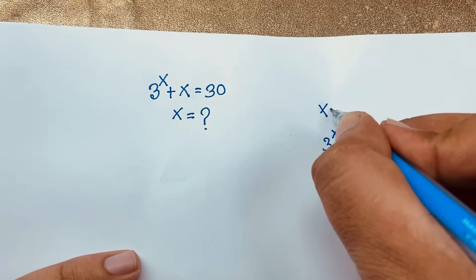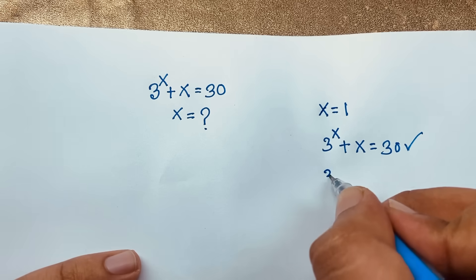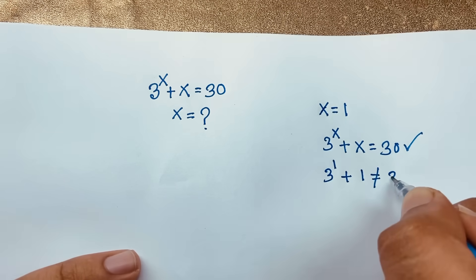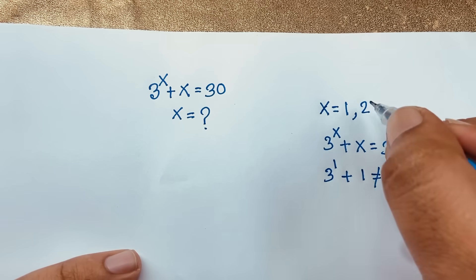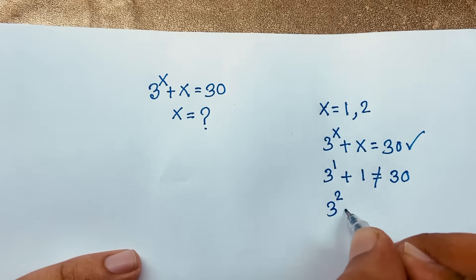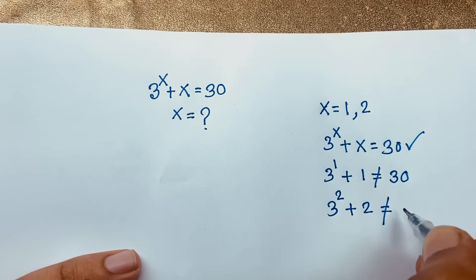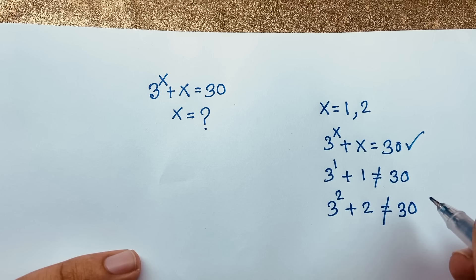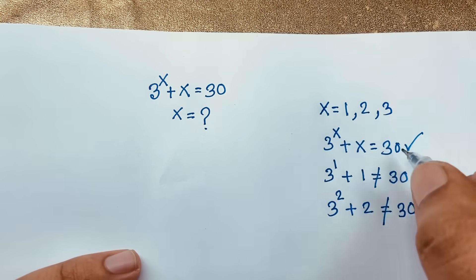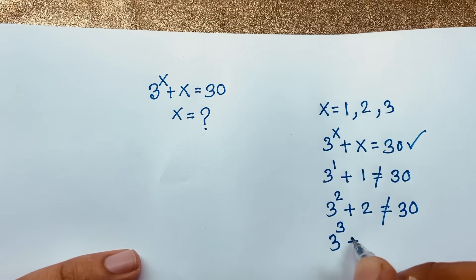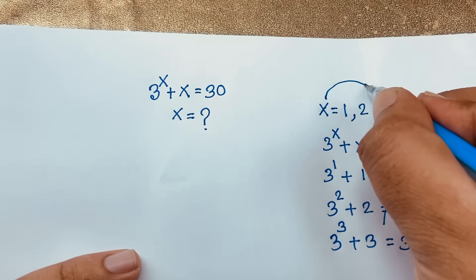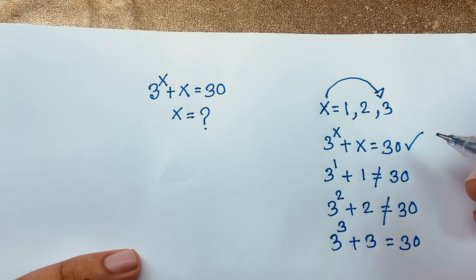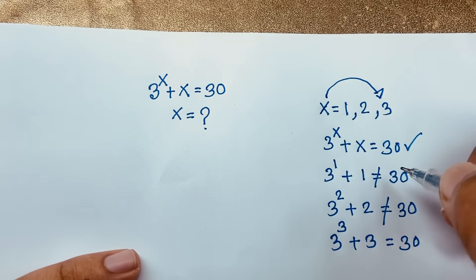First, let's test some values. If x equals 1: 3 to the power 1 plus 1 equals 4, not 30. If x equals 2: 3 to the power 2 plus 2 equals 11, not 30. If x equals 3: 3 to the power 3 plus 3 equals 27 plus 3, which equals 30. So x equals 3 is our answer — but let's solve it properly.